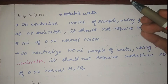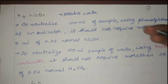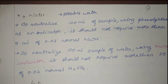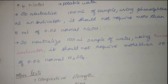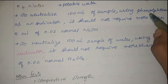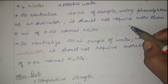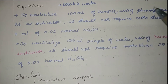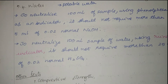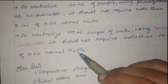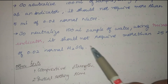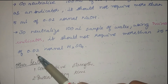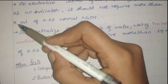The next material is water. Potable water is permissible — it is normal water with permissible amounts of minerals, such as municipal supply water. To test water quality, we have two tests. Using phenolphthalein as an indicator: to neutralize 100 ml of the sample, it should not require more than 5 ml of 0.02 normal NaOH — this is an alkaline medium test.